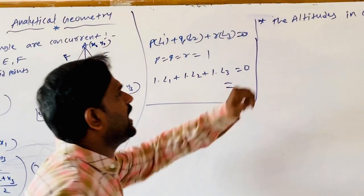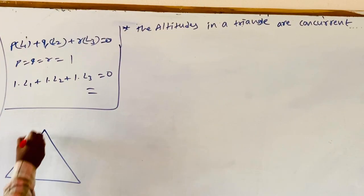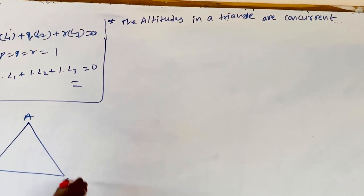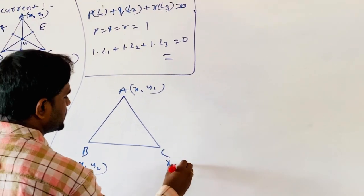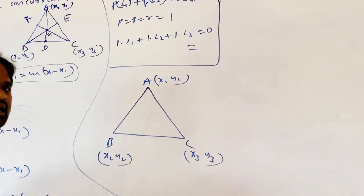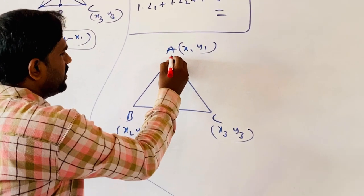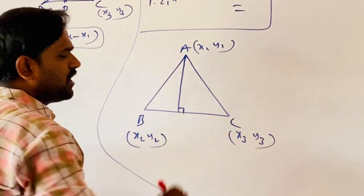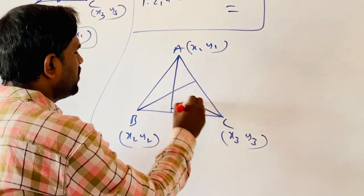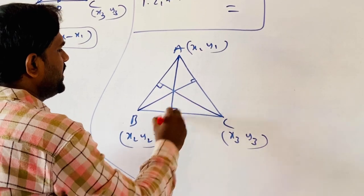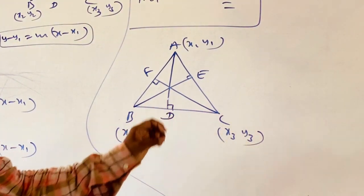Now we are going to show that the altitudes in a triangle are concurrent. What is an altitude? In triangle ABC with vertices (X1, Y1), (X2, Y2), (X3, Y3), an altitude is a line segment drawn from a vertex perpendicular to the opposite side. We have three altitudes: AD, BE, and CF.